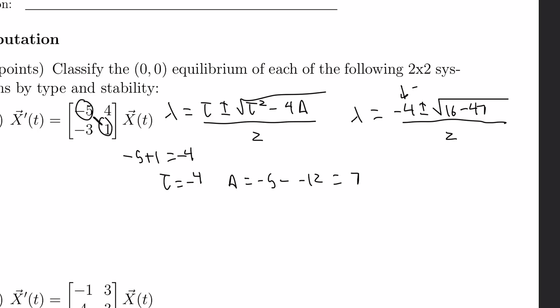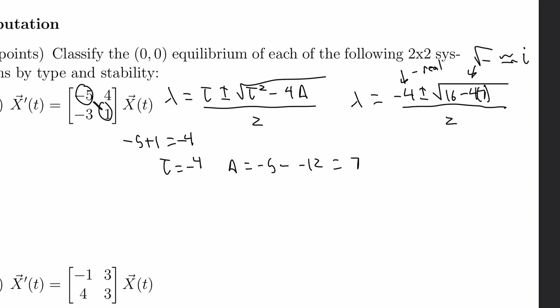We see a negative real part. Four times seven is twenty-eight, and sixteen minus twenty-eight is negative, so we have a negative under the square root — meaning it's going to have an imaginary component. These are complex conjugate eigenvalues, and since the real part is negative, it's going to be a stable spiral, with oscillatory motion caused by the imaginary part.